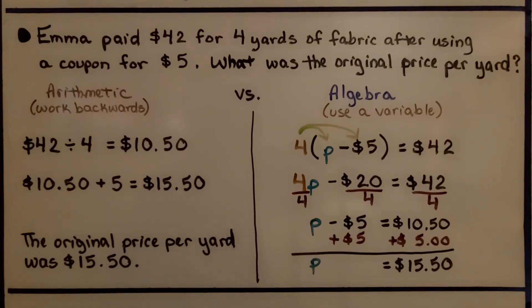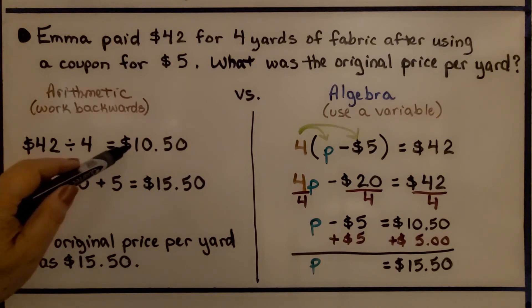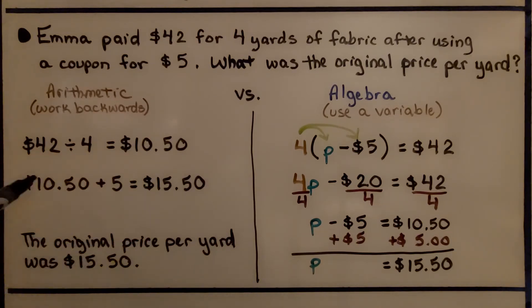Let's try another one. Emma paid $42 for 4 yards of fabric after using a coupon for $5. What was the original price per yard? So the arithmetic way, we're going to work backwards. We're going to start with what she paid, $42. We're going to divide it by the number of yards of fabric she purchased, and we're going to get $10.50. Now, we add this $5 coupon back on, and we get $15.50. So the original price per yard was $15.50.